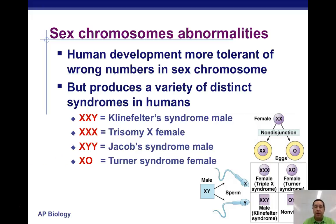Turner syndrome has no Y chromosome, so those individuals are female. Characteristics include short stature, sometimes webbing in the neck, and sometimes webbing in the fingers or toes. There is sometimes some mental impairment, but usually not too much. Like with Klinefelter syndrome, individuals with Turner syndrome are usually infertile.